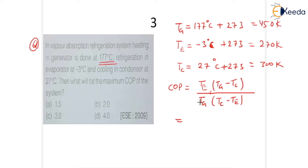So here what is the value of TE? 270 degrees Kelvin. What is the value of Tg? 450, 450 minus 300 in bracket, 300 minus 270. And here what is the value of Tg? 450.